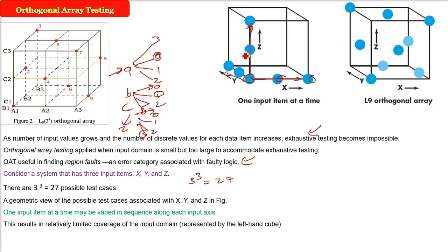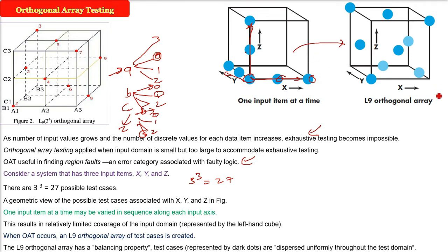If one item at a time, if we assume that, the result is relatively limited coverage of the input domain. If we equally distribute one item at a time using the L9 orthogonal array or—here you see—